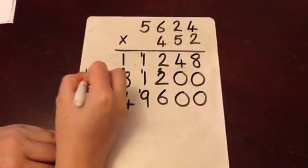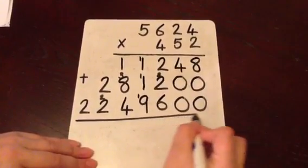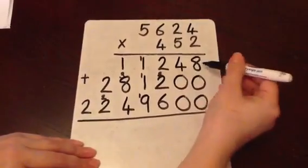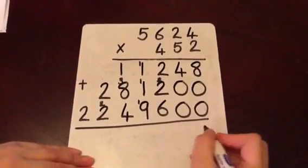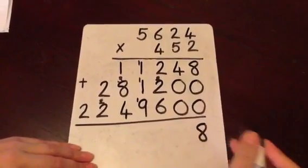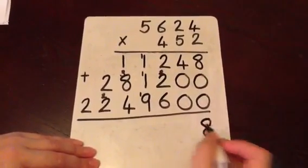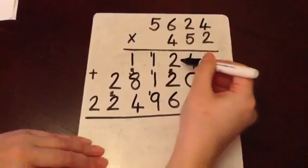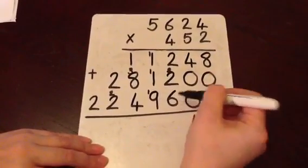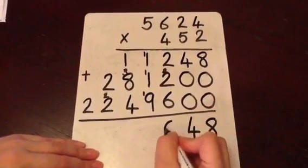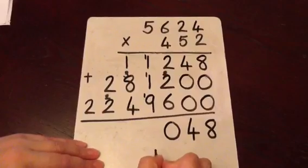Now we have to add the numbers together. And as always we begin with the units column. 8 and 0 and 0 is 8. 4 add 0 and 0 is 4. 2 add 2 add 6 is 10. We put the 0 in the column and carry the 1 underneath.